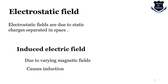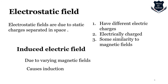When two objects in each other's vicinity have different electrical charges, an electrostatic field exists between them. An electrostatic field also forms around any single object that is electrically charged with respect to its environment. An object is negatively charged if it has an excess of electrons, and positively charged if it is deficient in electrons. An induced electric field is non-conservative, generated by changing magnetic fields.